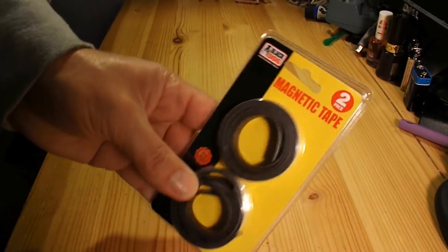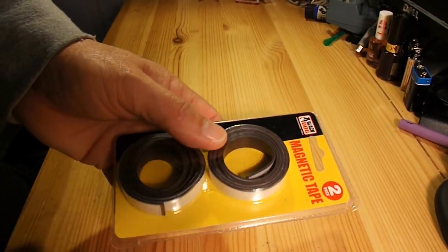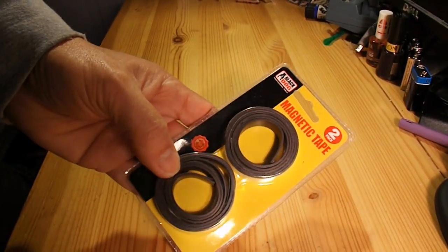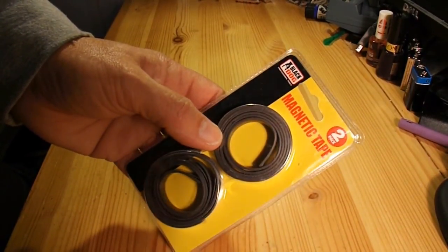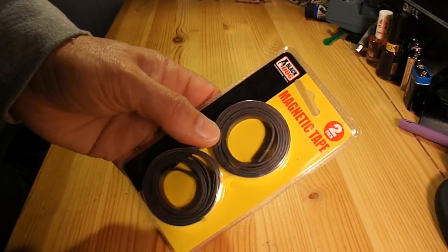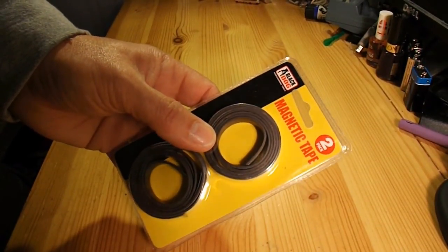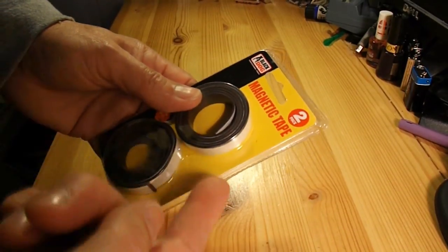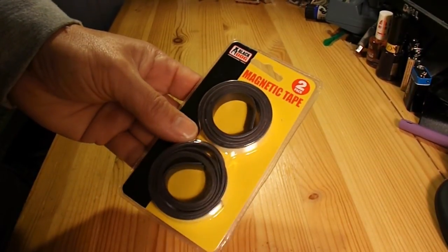I picked up this magnetic tape, the sort of stuff you use for sticking pictures to the front of your fridge or something like that. It's not going to be very powerful magnets. I don't even know which way it's magnetized, but I'm assuming the outside will be north and the inside will be south, something like that, rather than going across ways. I'm hoping that both coils of magnetic tape are magnetized in the same direction.